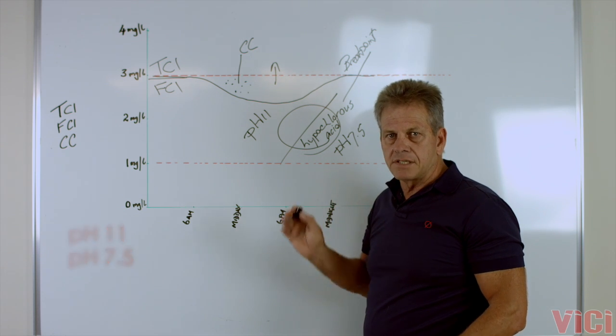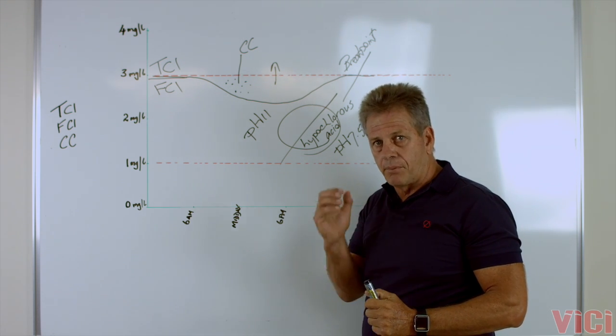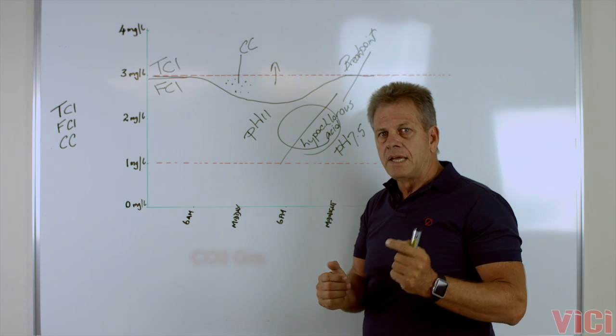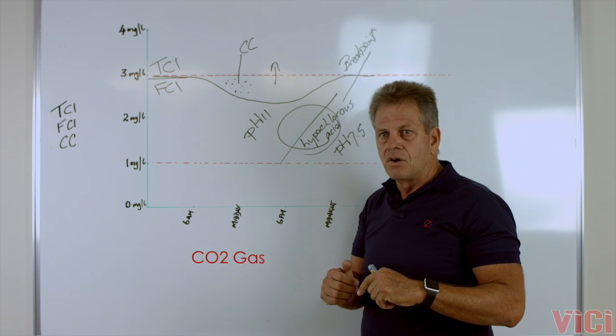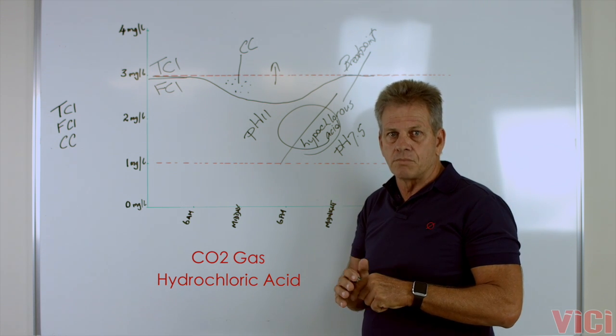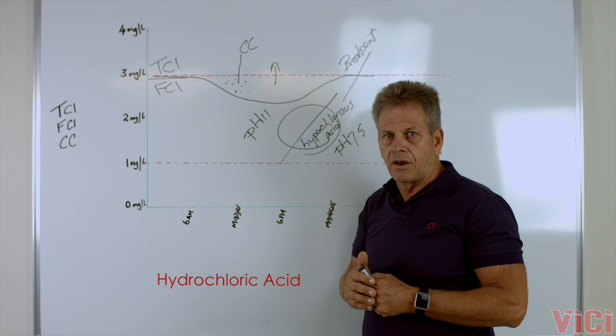Now to get a pH of 7.5, because we're going to drive the pH up by putting chlorine into the swimming pool, what we have to inject into the pool is CO2 gas or hydrochloric acid, or in some cases we do both. In the main, acid will work a lot quicker and a lot more efficiently.